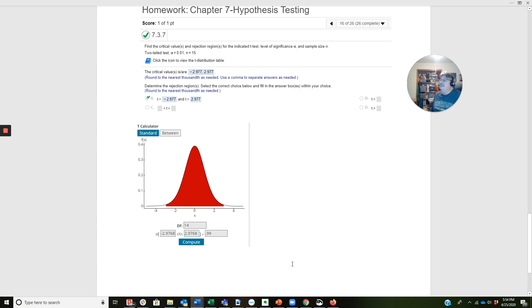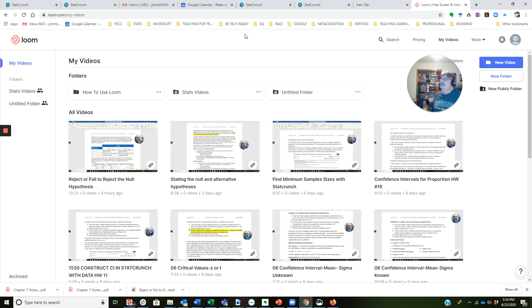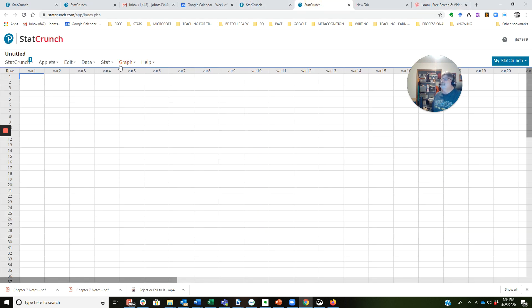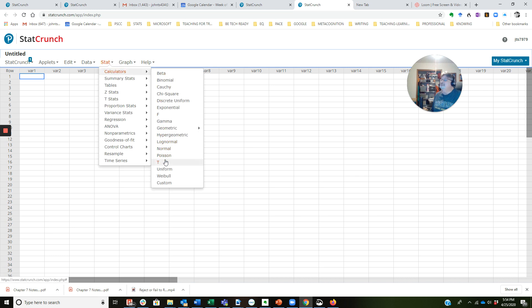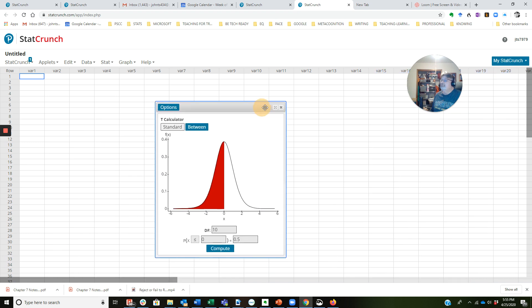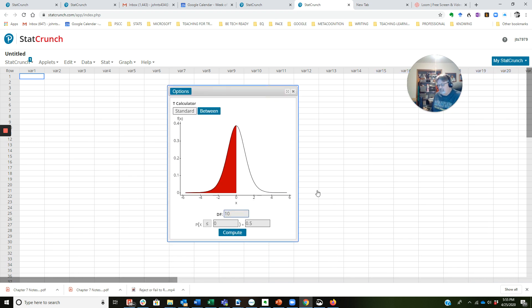Now I'm going to go ahead and pull up StatCrunch. I'm going to pull up the T calculator. Hopefully everybody can see that okay. My degrees of freedom was 14. I'm going to use between. And I'm going to put the 0.99 in here. When I click Compute, we see that we get the same negative 2.9768 and a positive 2.9768.